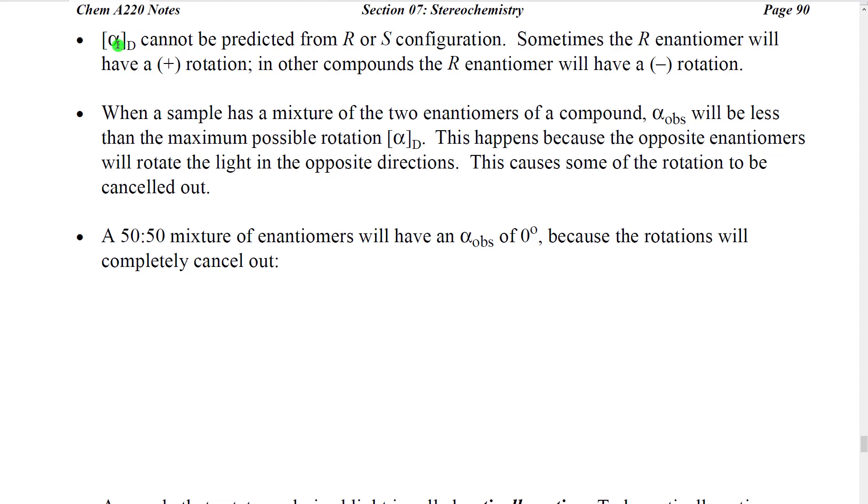Now, the specific rotation can't be predicted from the R or S configurations of the chirality centers in a molecule. In fact, when we have single chirality center molecules, we will see that sometimes the R enantiomer will have a plus rotation and in other compounds with different atoms in it, it will have a minus rotation. So therefore, we can't predict just by looking at a given enantiomer whether the light will rotate in the positive or negative direction. However, if we have a given enantiomer and we know which direction that light would be rotated, we do know that the opposite enantiomer would have light rotating in the opposite direction.